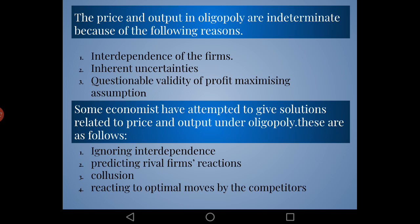Some economists have attempted to give solutions related to price and output determination under oligopoly. The first solution is ignoring the interdependence — by ignoring interdependence, the demand curve becomes determinate and the standard theory of the firm can be used to find a definite level of price and output. The second solution is predicting the rival firm's reaction — based on past experience and past examples, you can assume how a rival firm will react when your price or output changes, enabling a determinate demand curve to be derived.